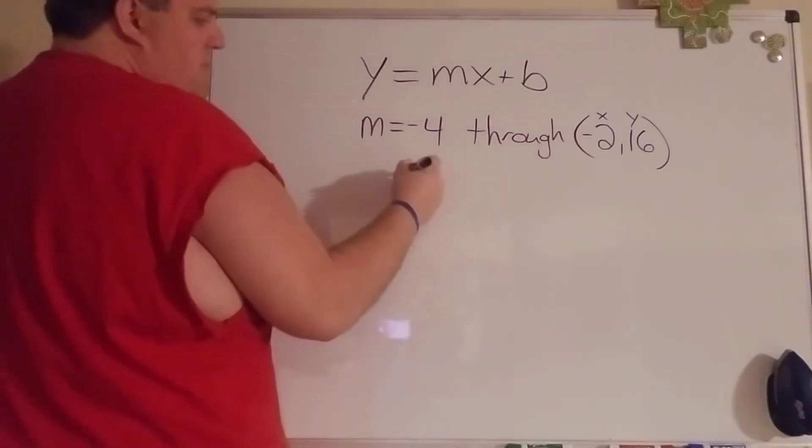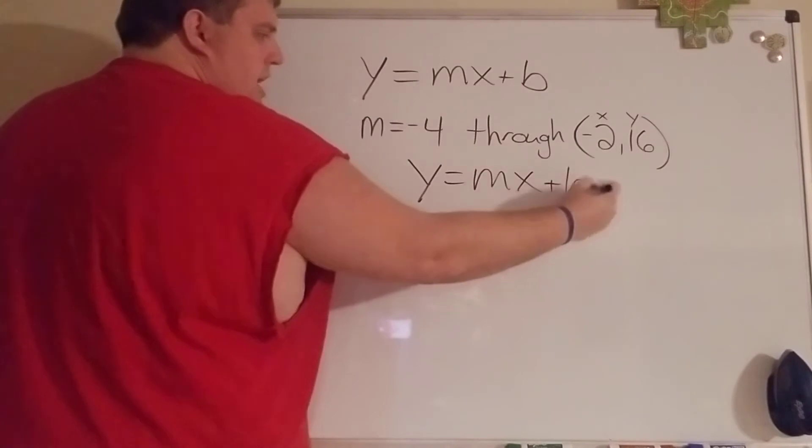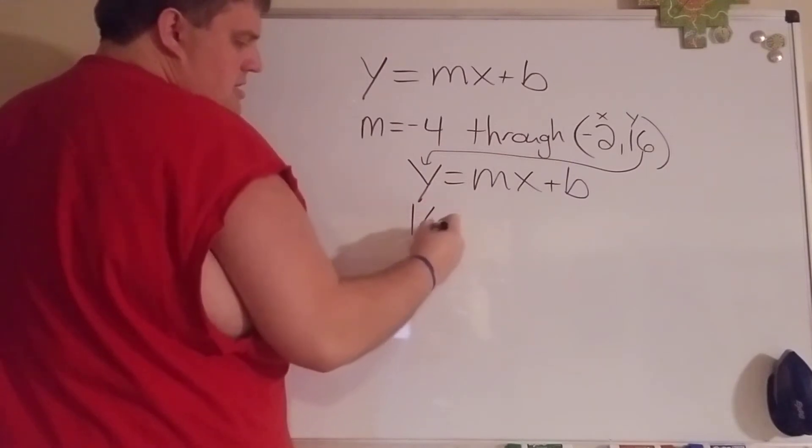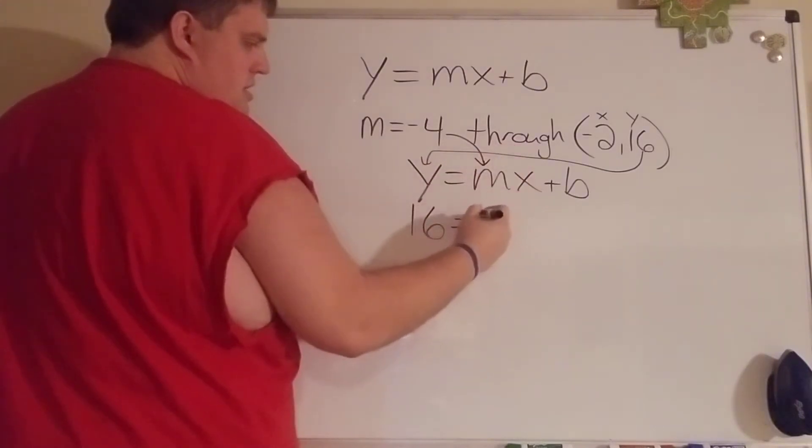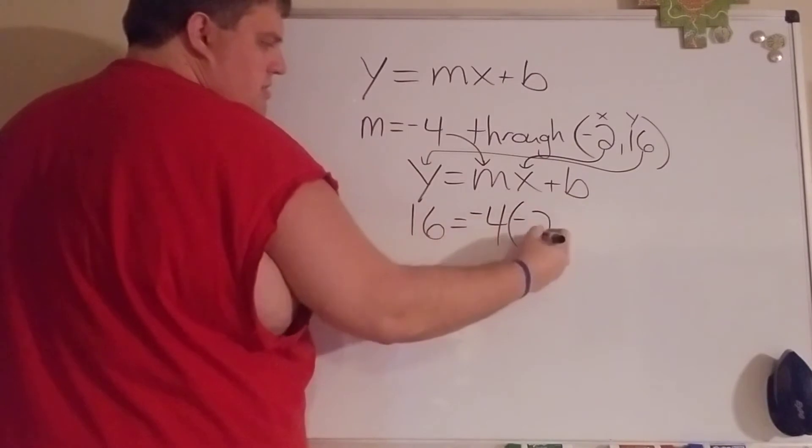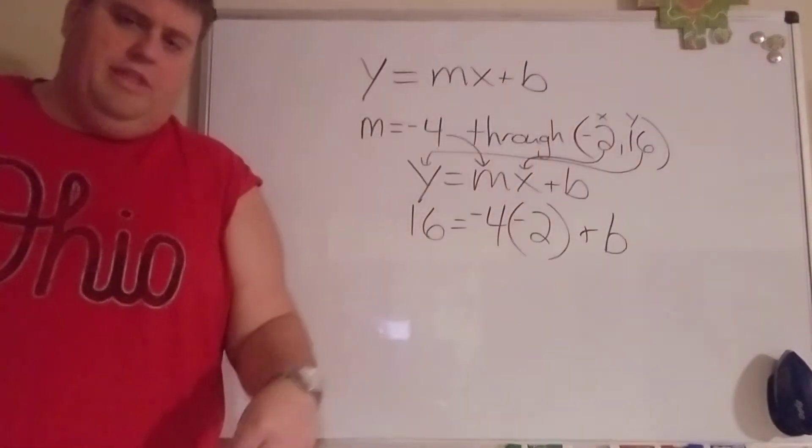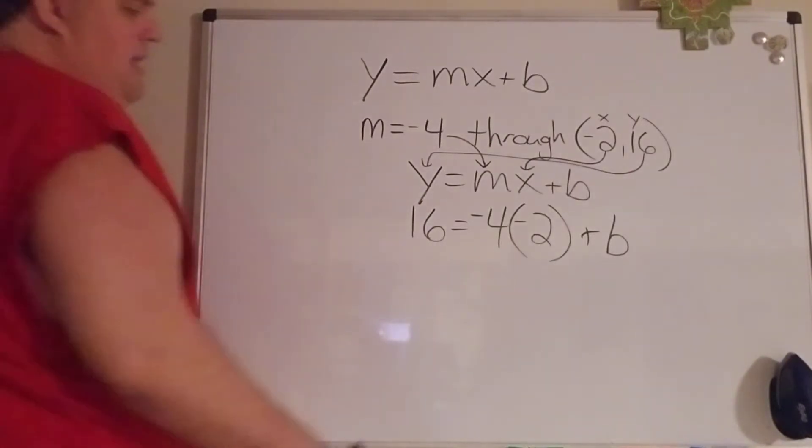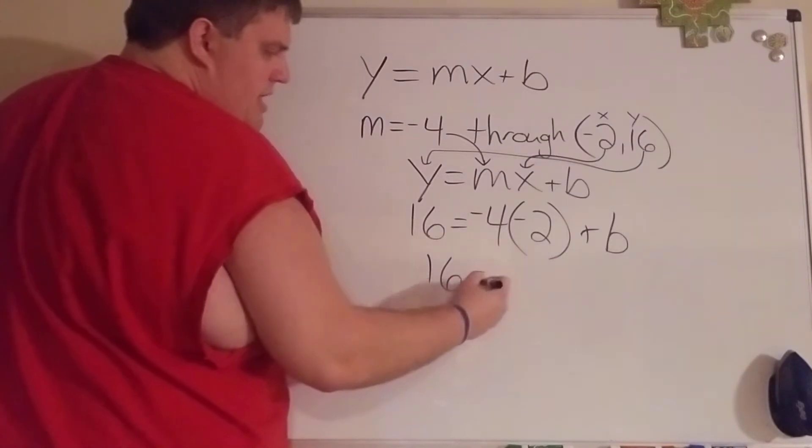We can actually figure out the y-intercept with just this information because we know that this point here is made up of an x value and a y value. I'm going to use slope intercept form, y equals mx plus b, and I'm just going to plug in the information we know. We know y is sixteen, we know the slope is negative four, we know the x value here is negative two, but we don't know what b is yet.